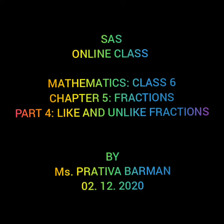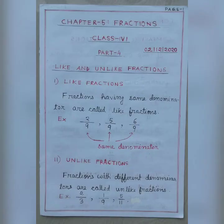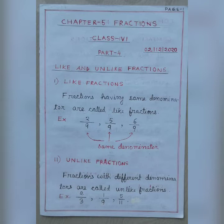Good morning dear students. This is part 4 of chapter 5 on fractions. In our earlier class we have seen how to compare fractions. Now we shall go to another topic: like and unlike fractions. Fractions having the same denominator are called like fractions. For example, 2 by 9, 5 by 9, and 6 by 9 — the denominator is the same in all three cases, so all three fractions are like fractions.